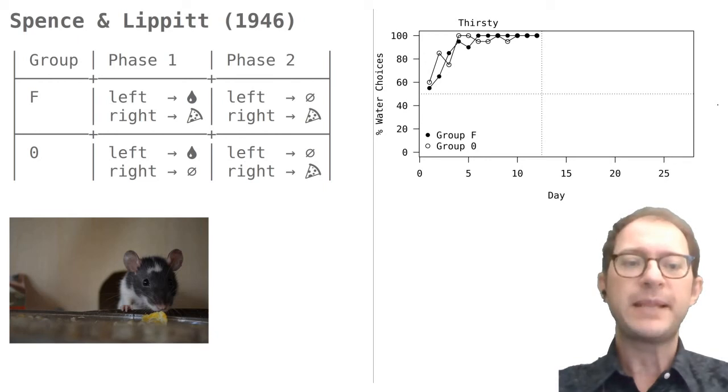If they had formed the mental map of the maze that included the presence of the food in the right arm, they should definitely do this switch.